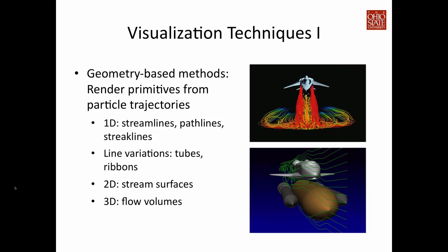Basically flow visualization techniques can be divided into three categories. One is geometry-based methods, where we render point or line primitives from particle trajectories. Those primitives can be 1D objects such as streamline, pathline, and streaklines. Or we can have line variations to increase depth cues. For example, we can create tubes or ribbons based on the 1D line primitives. People also create a sequence of lines and connect them together to form surfaces, and we call this stream surfaces. And finally, you can create lines in three-dimensional space and span volume from those lines and create something called flow volume.